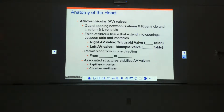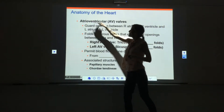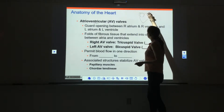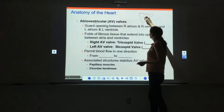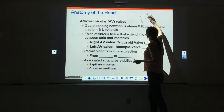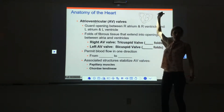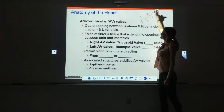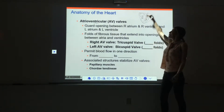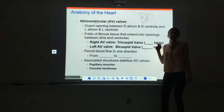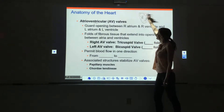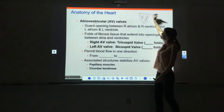The term atrioventricular gives you a clue as to where these AV valves are. When we look at the heart, we have atria on top and then ventricles on the bottom. The blood goes from the atrium down to the ventricle, so obviously there's a connection between the two chambers. We guard that connection with a valve because we want the blood to go from the atria down to the ventricle — we don't want it to go backwards.